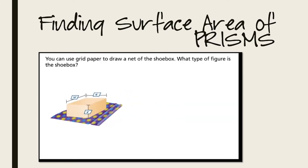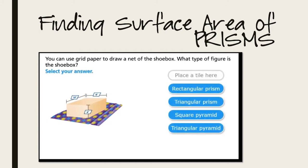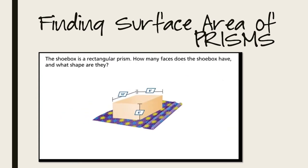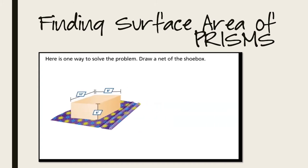You can use grid paper to draw a net of the shoe box. What type of figure is the shoe box? Select your answer. The shoe box is a rectangular prism. How many faces does the shoe box have and what shape are they? Shoe box has six faces. The faces are rectangles. Here is one way to solve the problem. Draw a net of the shoe box.